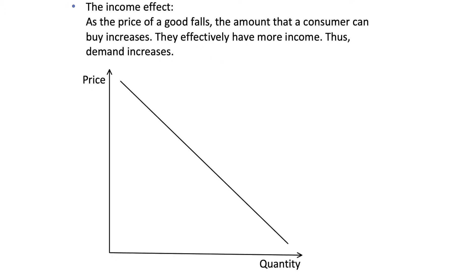We'll start with the income effect. This says that as the price of a good falls, the amount that a consumer can buy increases. A consumer effectively has more income, so demand for that good will increase, and this is why we call it the income effect — because we're effectively increasing the income of a consumer.